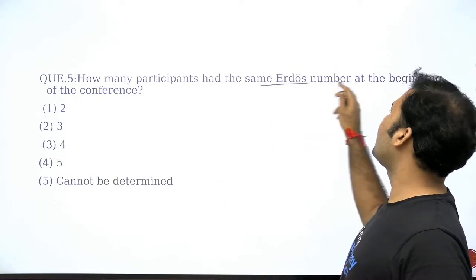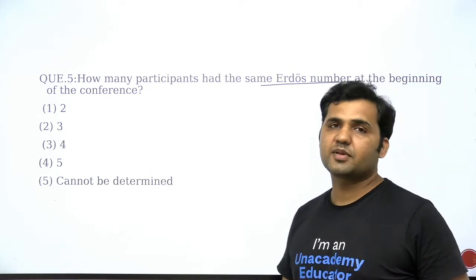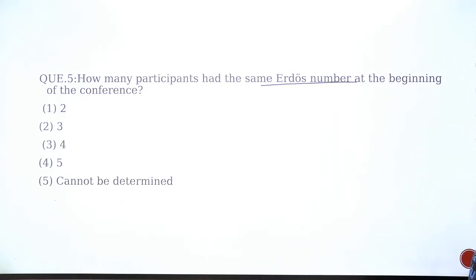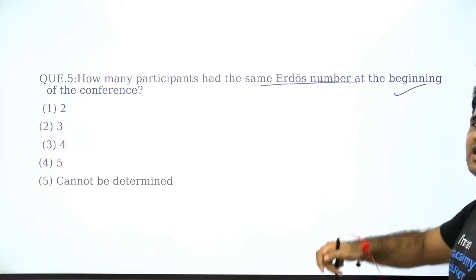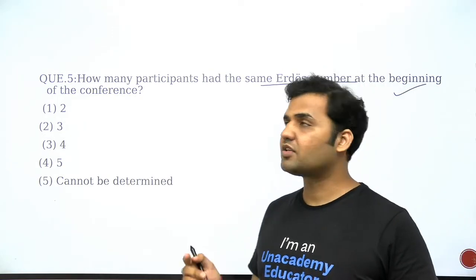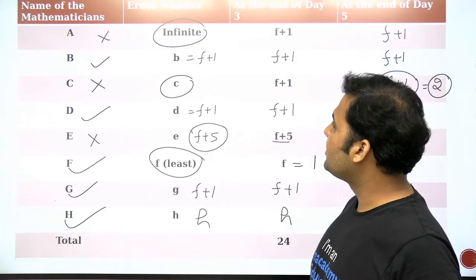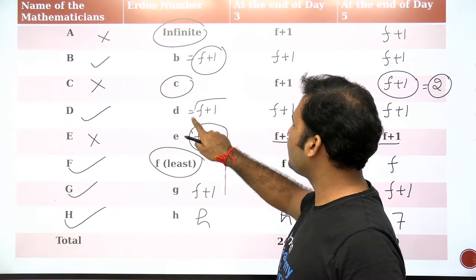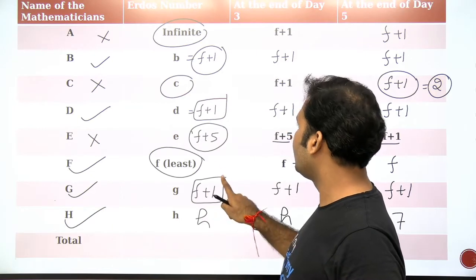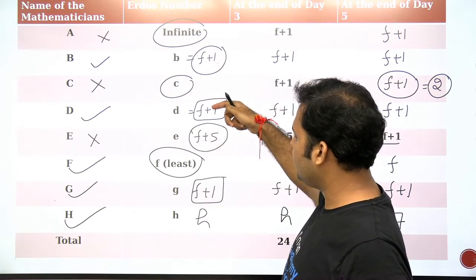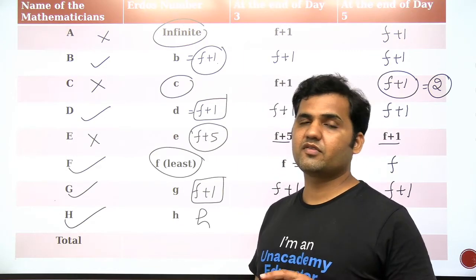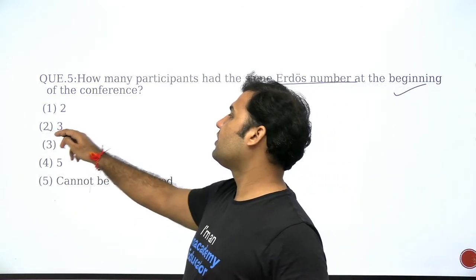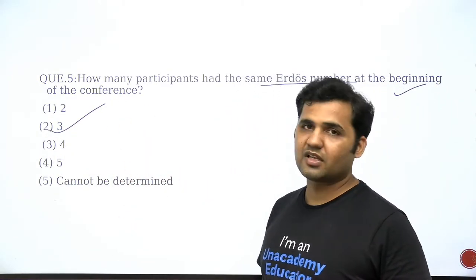How many participants had the same Erdos number at the beginning of the conference? At the beginning of the conference, B ka Erdos number is F+1, D ka Erdos number is F+1, and G ka Erdos number is also F+1. So three participants had the same Erdos number at the beginning of the conference. Therefore, the second option will be the answer to the question.